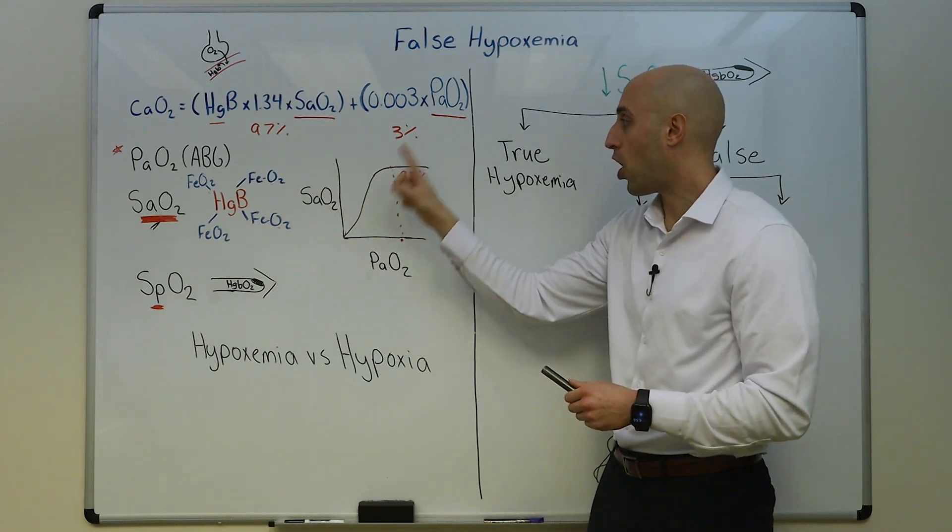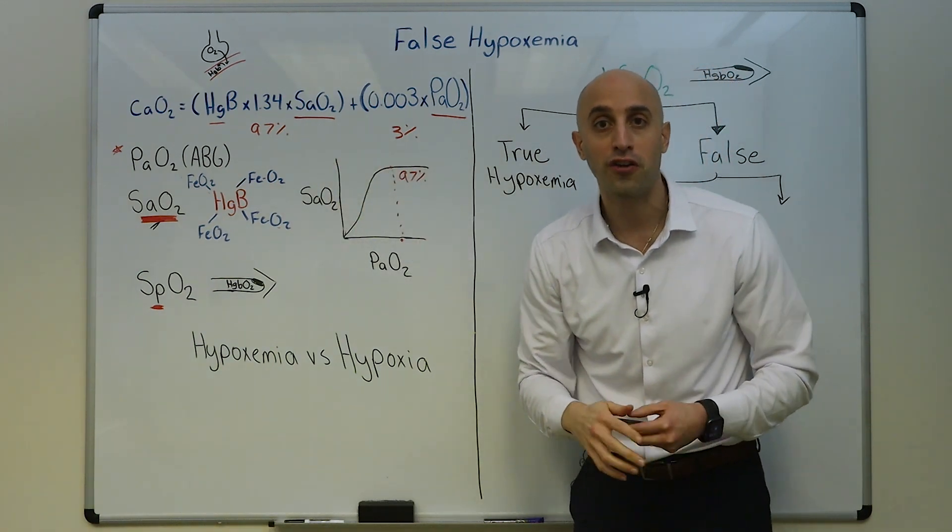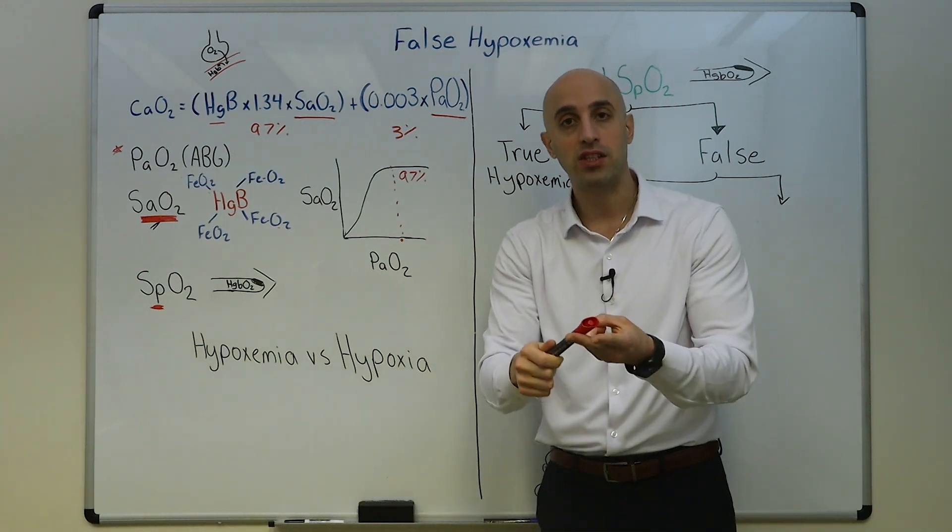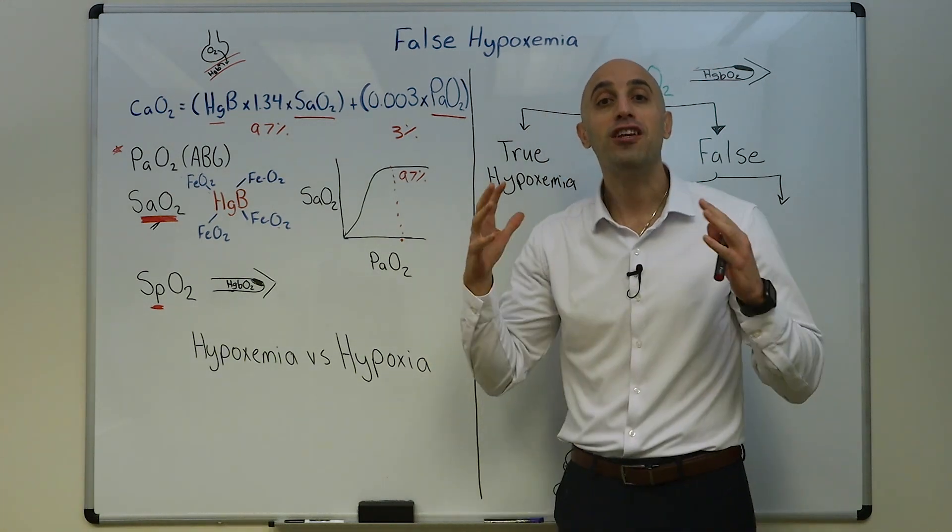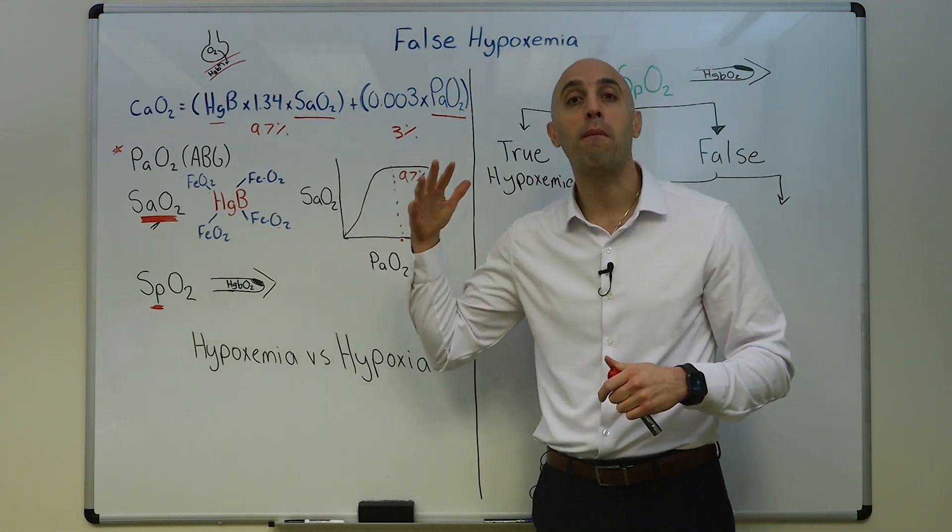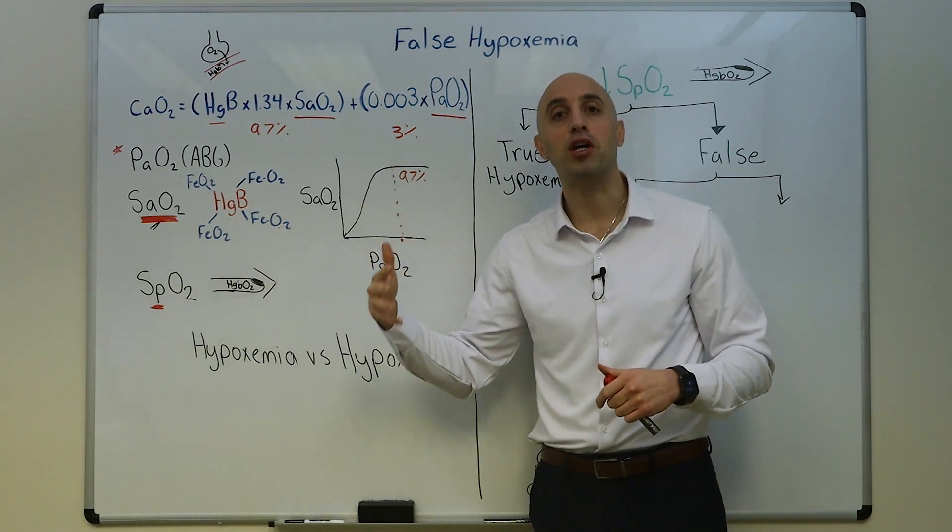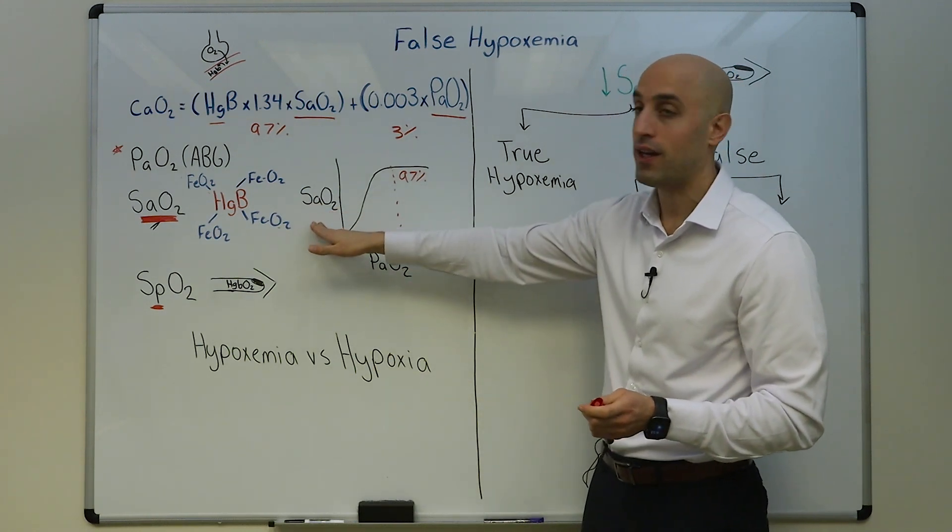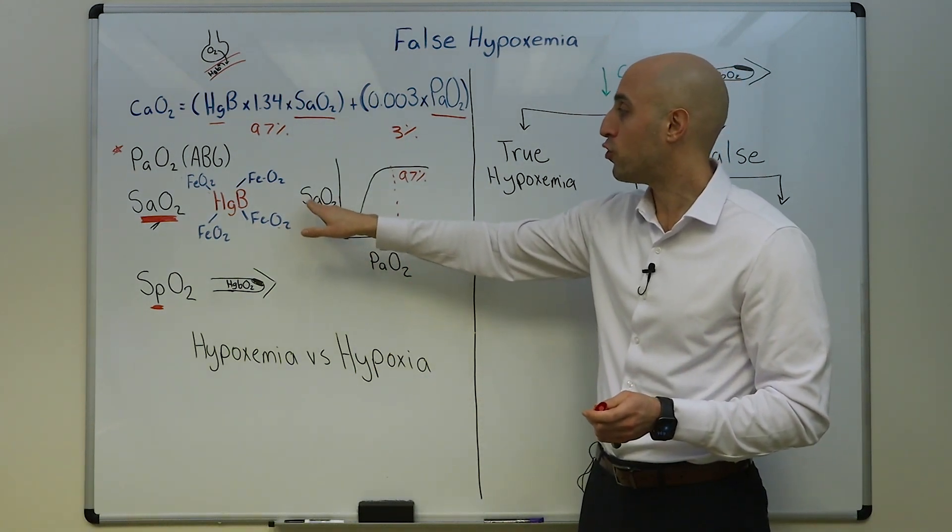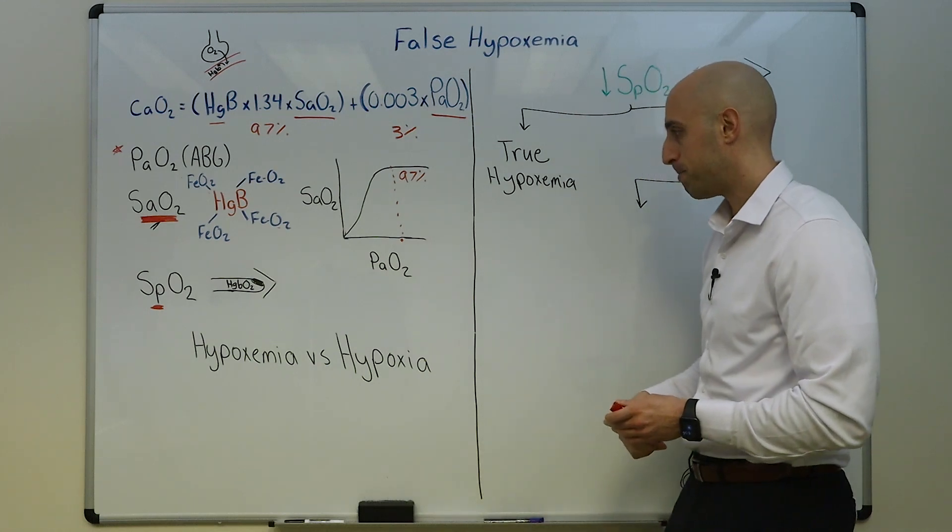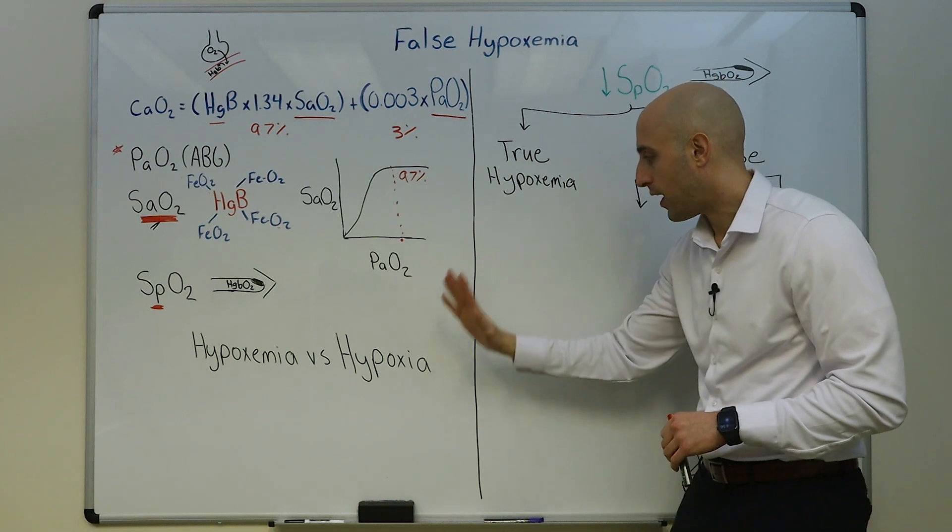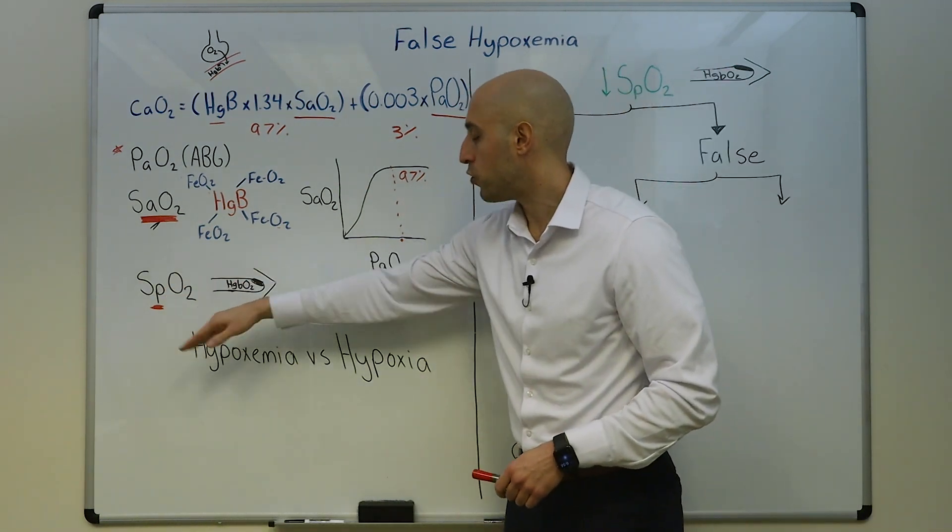So this is measuring the percentage of these binding sites that are bound by the oxygen molecule. You can actually directly measure the oxygen saturation of the hemoglobin molecule with co-oxymetry, meaning you're actually measuring it, you're not calculating it. The problem with calculating it is that this nomogram of the oxygen hemoglobin dissociation curve makes a few assumptions about the temperature, the pH, the CO2.